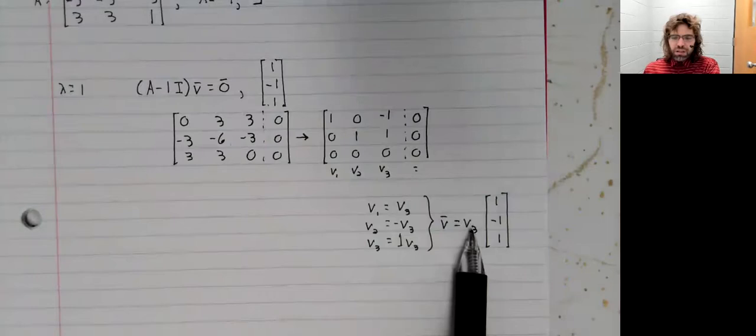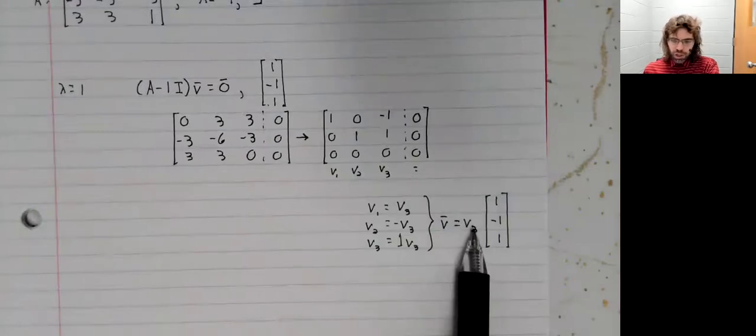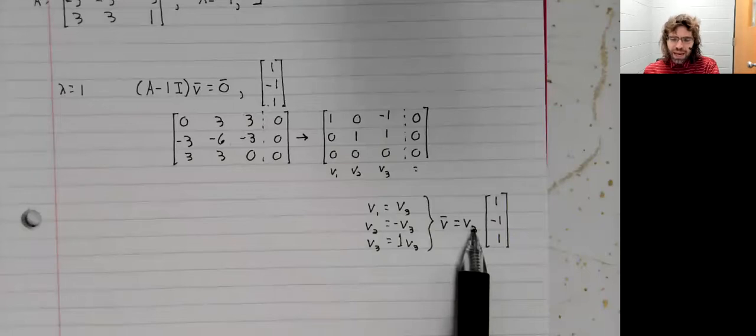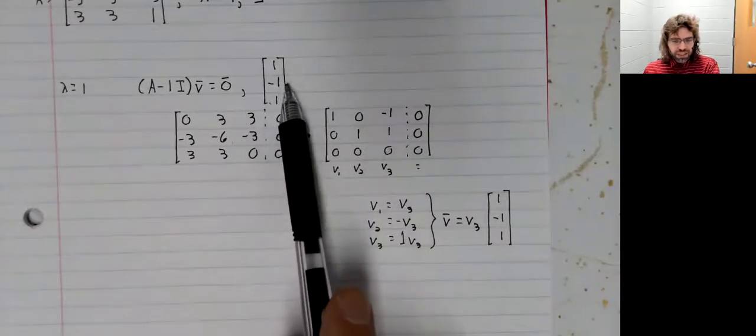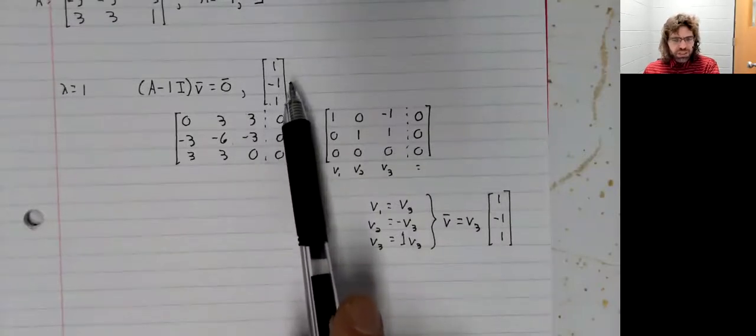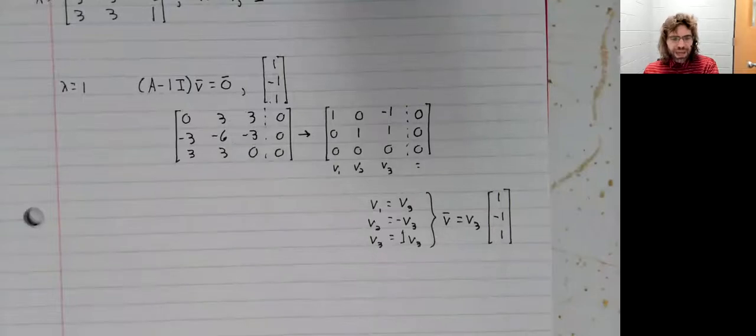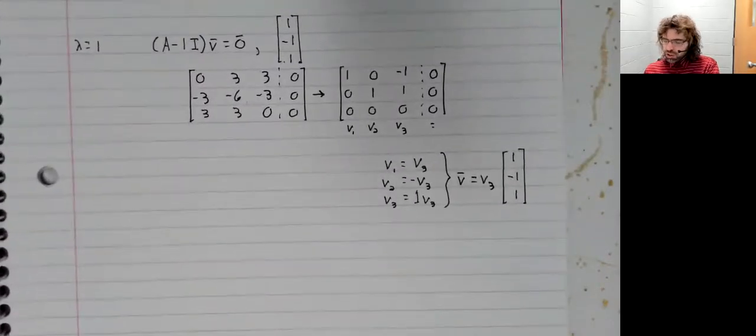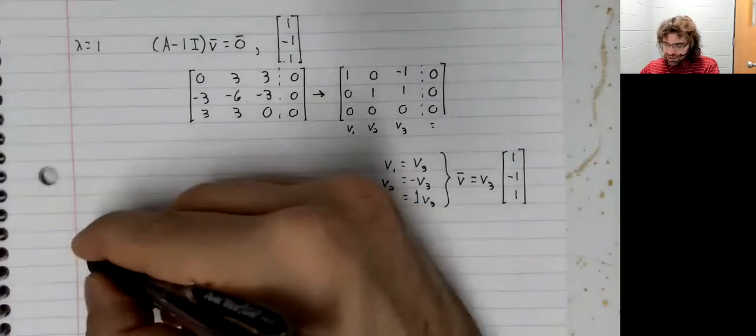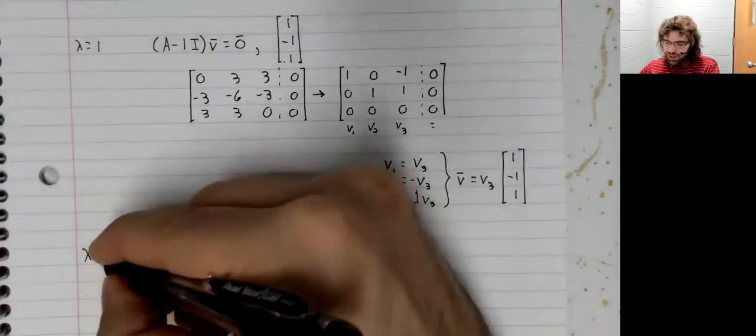Because if we let V3 be some other number, like if we let V3 be one half, we would get a second eigenvector. But the second eigenvector we got would be a linear multiple of this. It wouldn't be linearly independent. And we need three linearly independent eigenvectors.